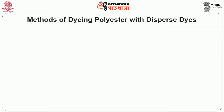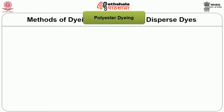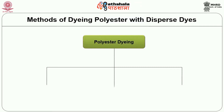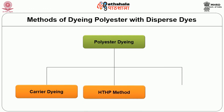Now we move on to the methods of polyester dyeing. Polyester can be dyed using any one of three methods: carrier dyeing, which is a conventional method using phenyls or other levelling agents; HTHP method (high temperature and high pressure); and thermosol method. Of these three, thermosol method is most preferred as it is very effective and takes less time. Carrier dyeing is now obsolete due to its effect on the environment and on human skin.